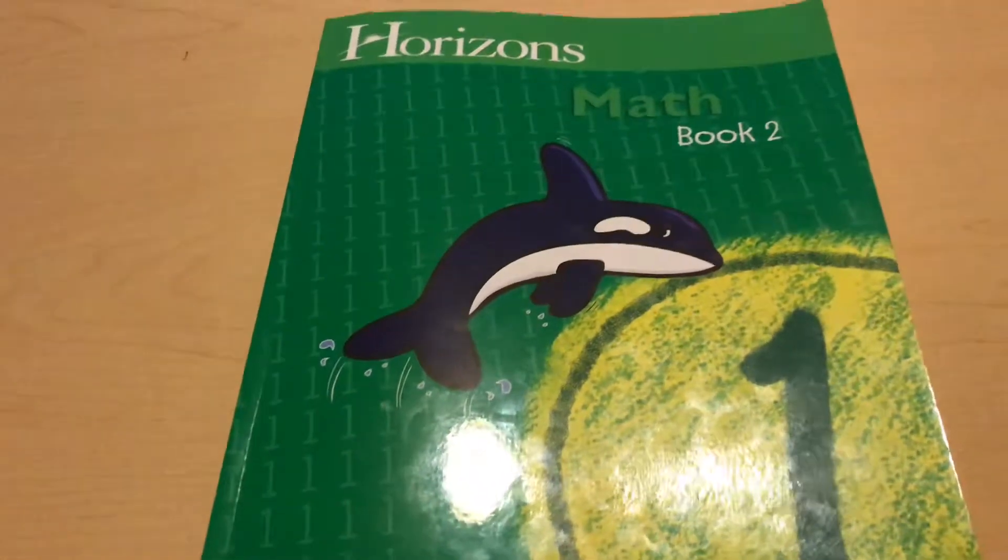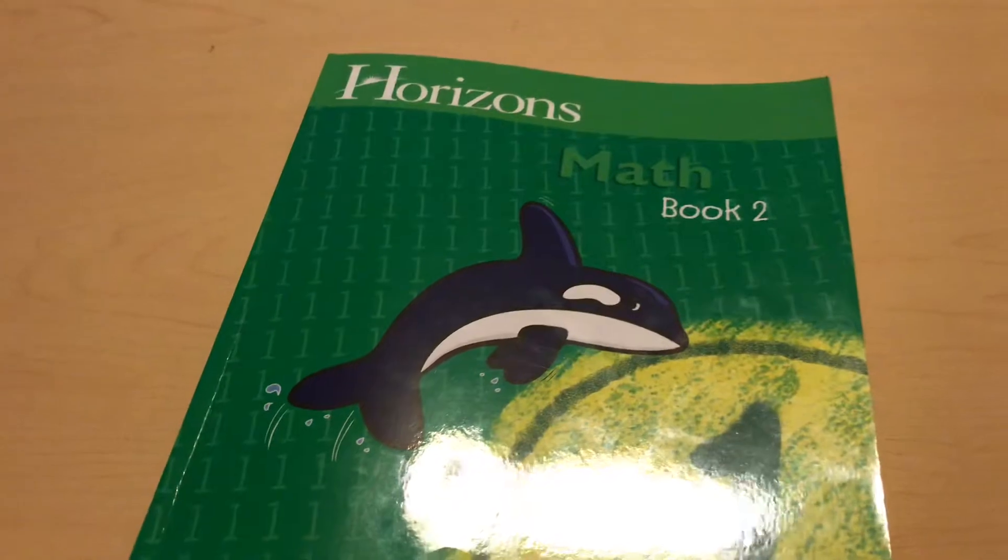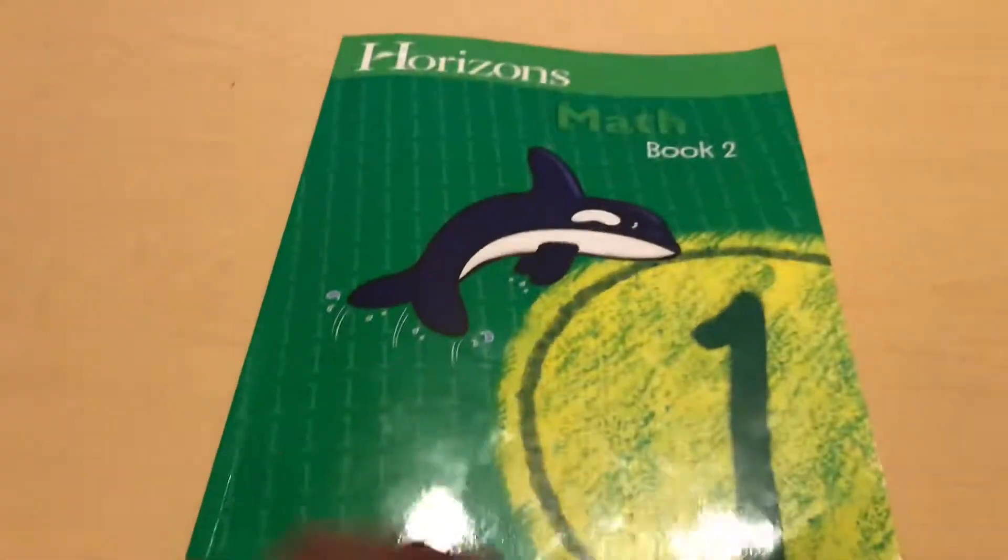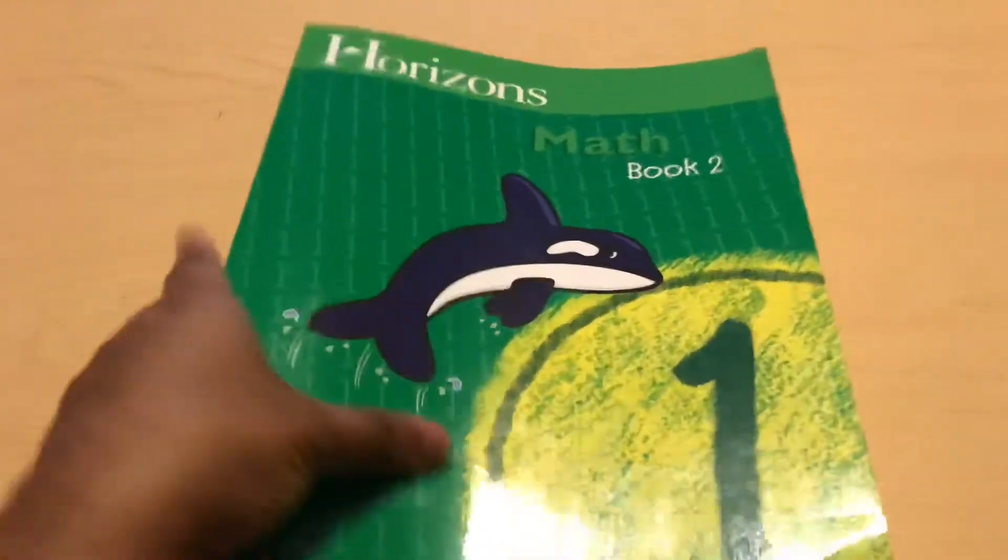So that's pretty much it. This is the flip through of Horizons math book two for grade one. If you guys have any questions, let me know in the comments down below. Give this video a thumbs up, subscribe to my channel, and I'll see you guys in the next video. Bye-bye.